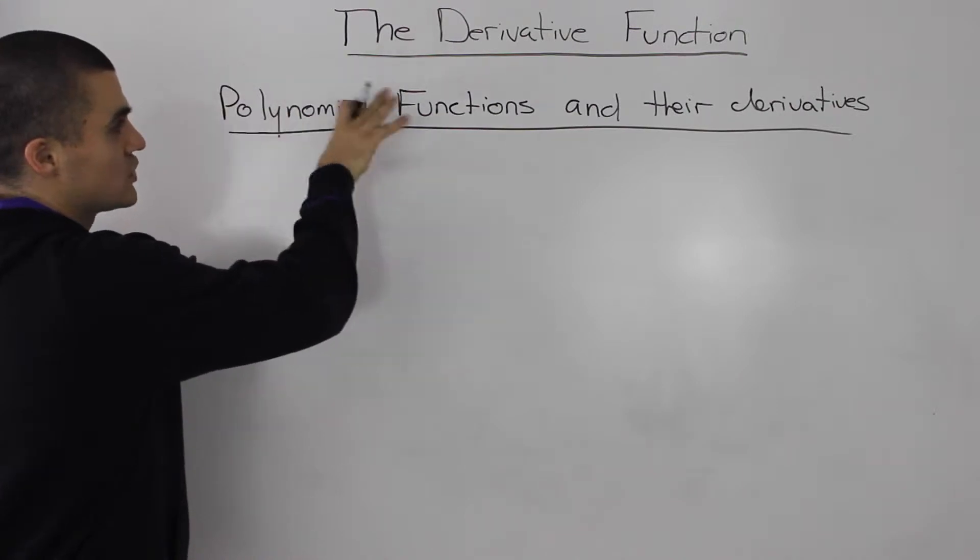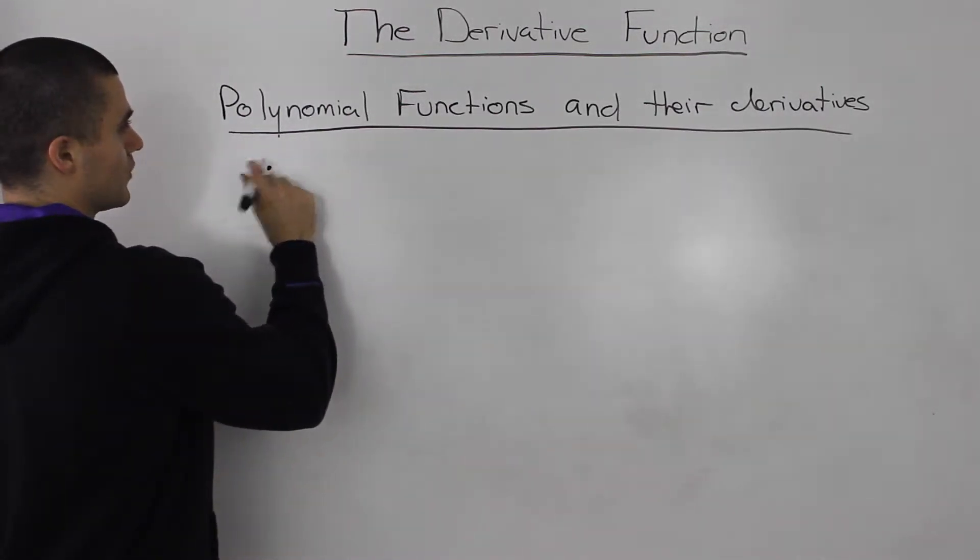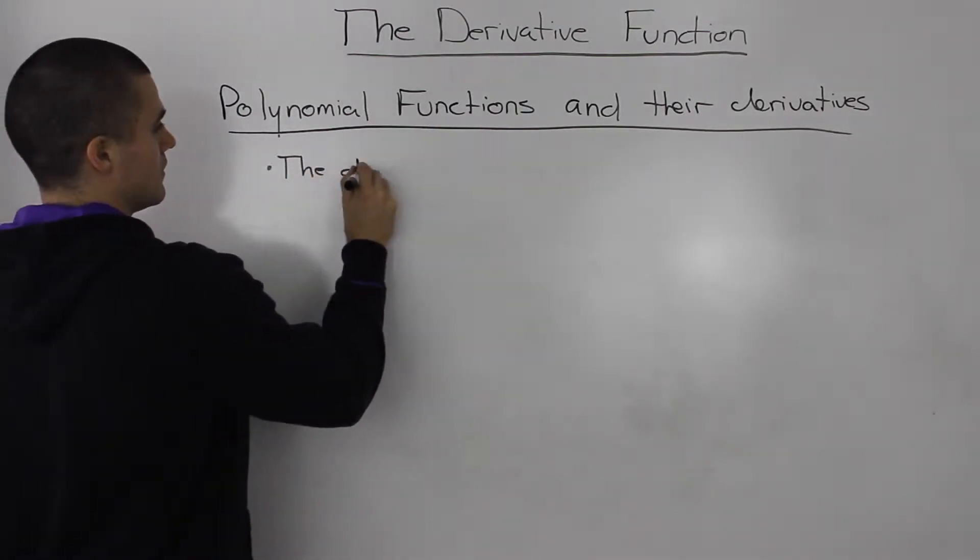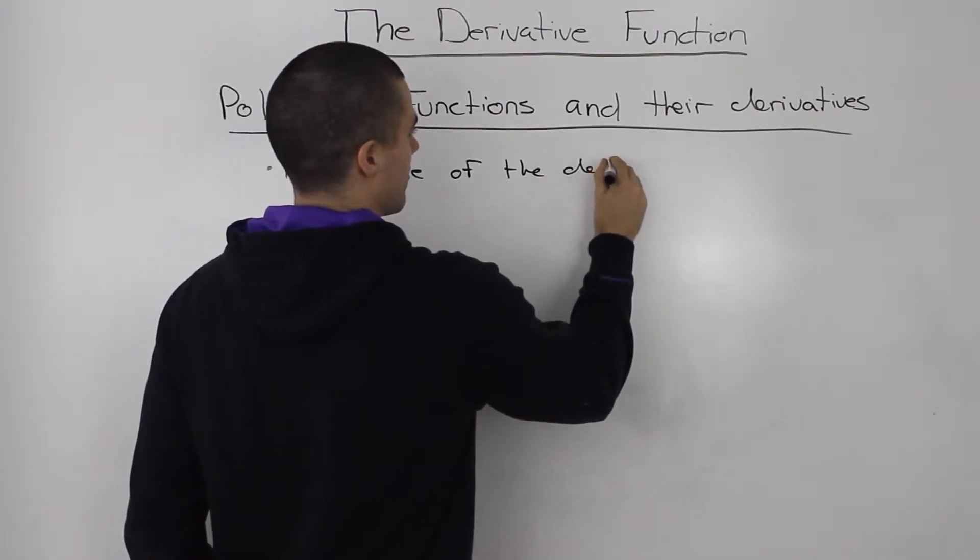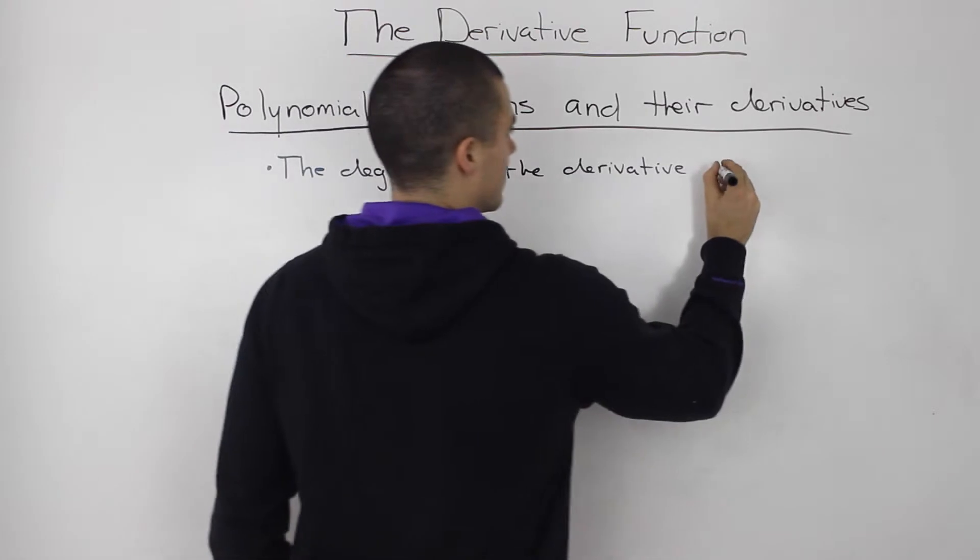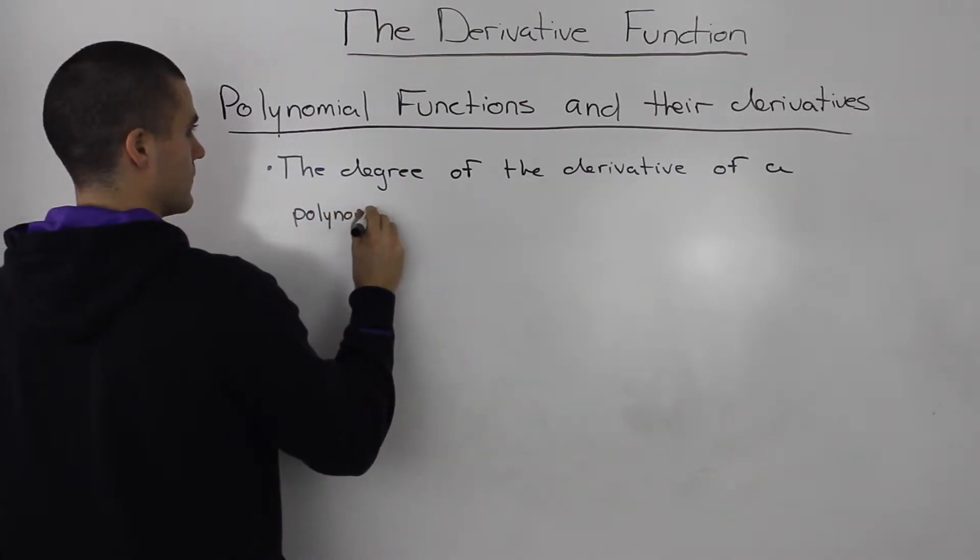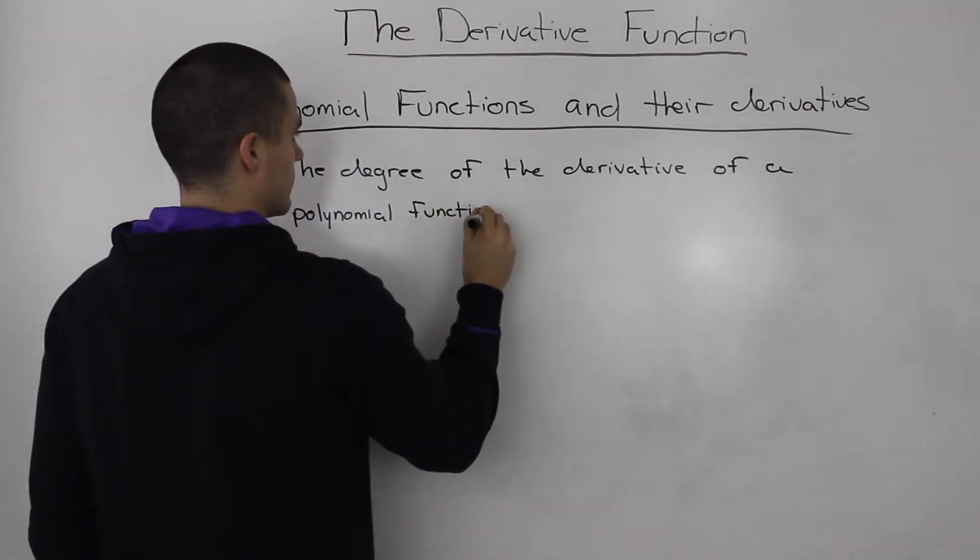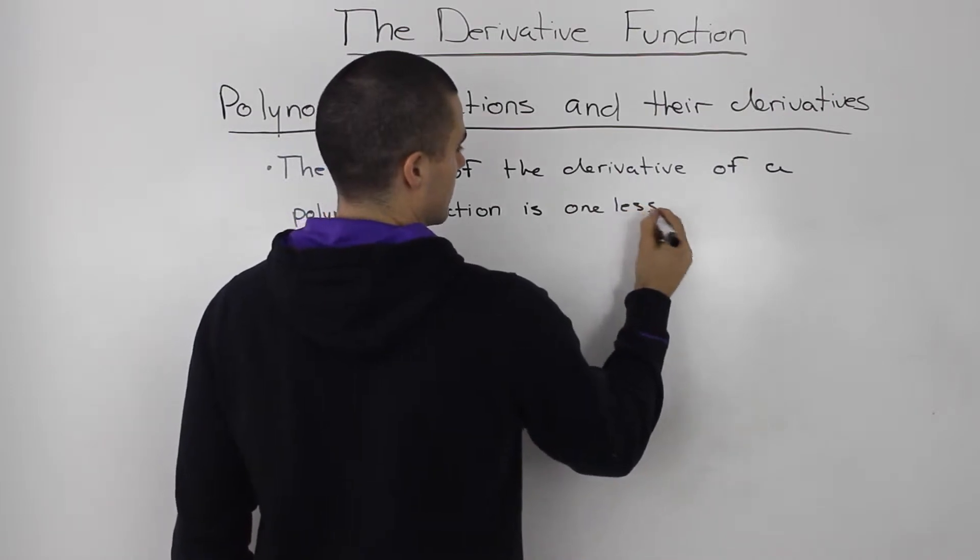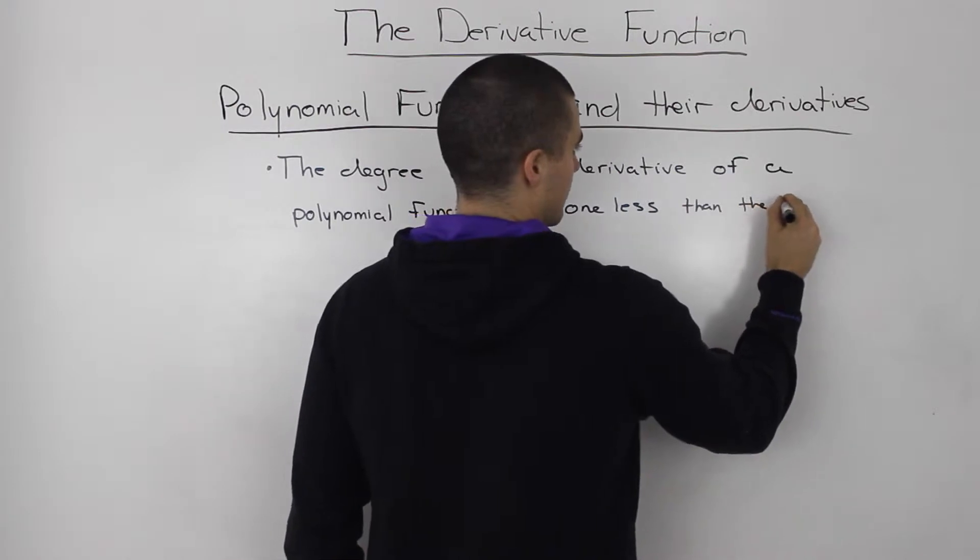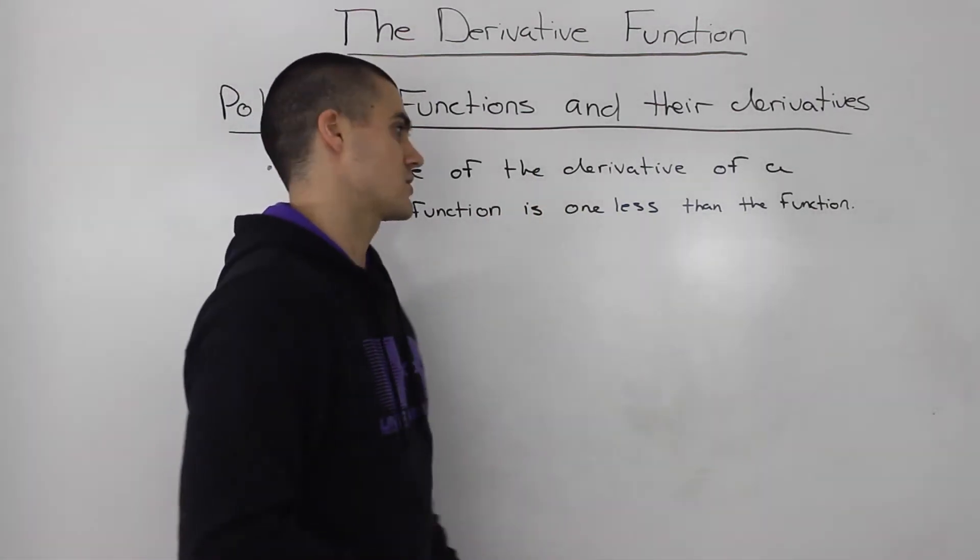If you don't know what a polynomial or the definition of a polynomial function is, you may want to go back and review that. But basically, the relationship is this: the degree of the derivative of a polynomial function is one less than the function. That's always the relationship.